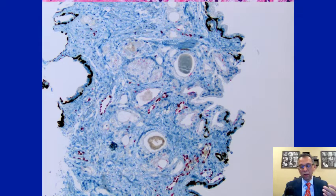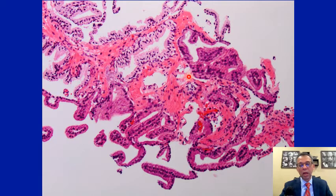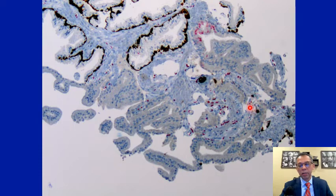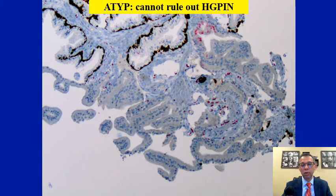Here is a scenario where you may end up calling atypical because you cannot entirely exclude partial atrophy from your diagnosis. In this particular situation, you are dealing with large undulated glands with very amphophilic cytoplasm. Compared to adjacent benign glands, these glands appear very dark, and are cytologically atypical with nuclear enlargement and prominent nucleoli. These glands look worrisome on morphological grounds. When I did the PIN4 basal cell stain, there were rare basal cells within this large gland. The problem is the focus is relatively very small, so you cannot exclude high-grade PIN from the differential diagnosis. This type of lesion I would refer to as atypical because I cannot exclude high-grade PIN completely.